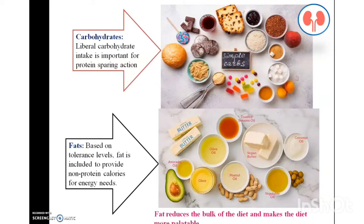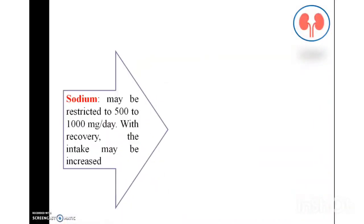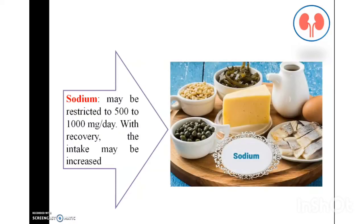Coming to carbohydrates: liberal intake of carbohydrates is important for protein-sparing action. Simple sugars and jellies are examples of carbohydrates. Fats reduce the bulk of the diet and make it more palatable. Coming to sodium: sodium is restricted to 500 to 2000 milligrams per day, and with recovery the intake may be increased. Sodium restriction is dependent on the degree of oliguria.